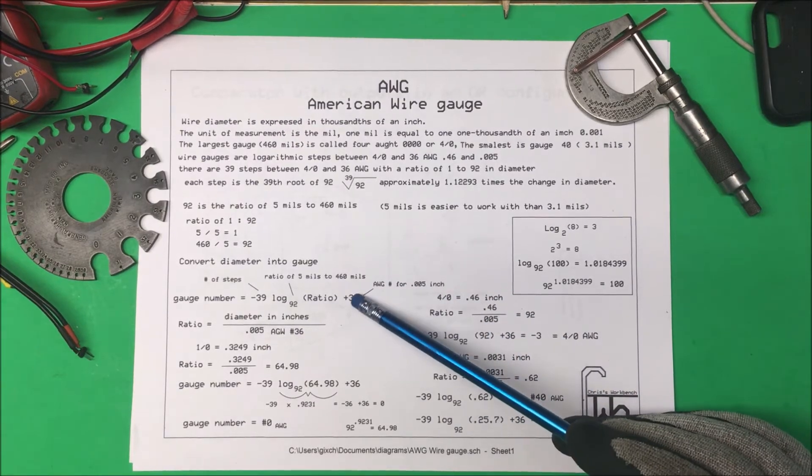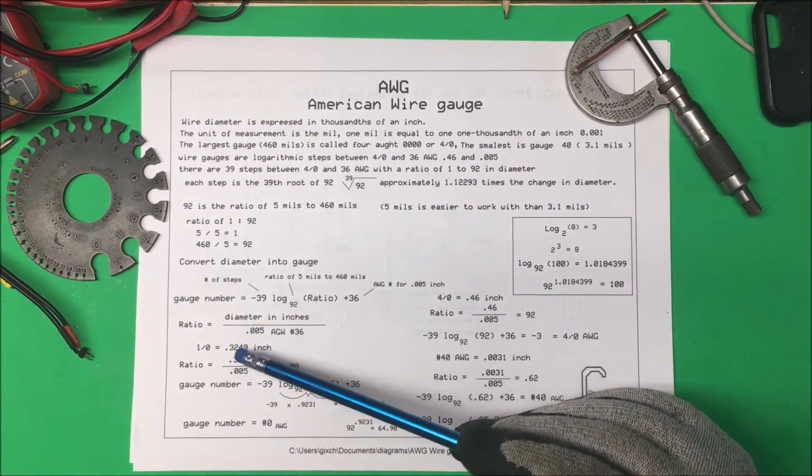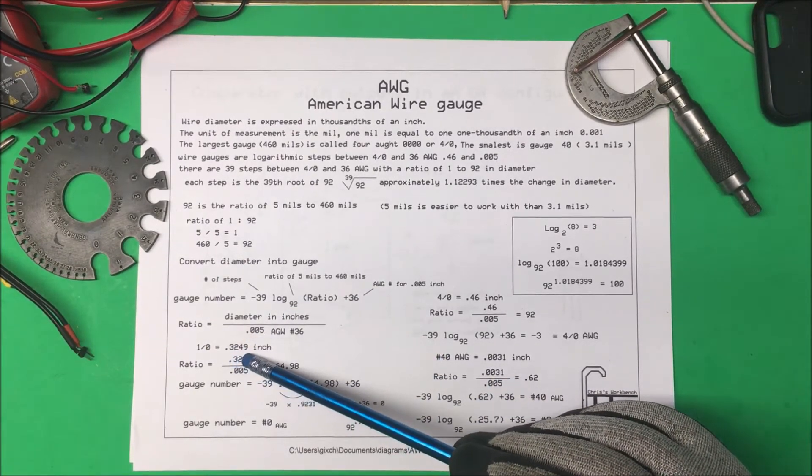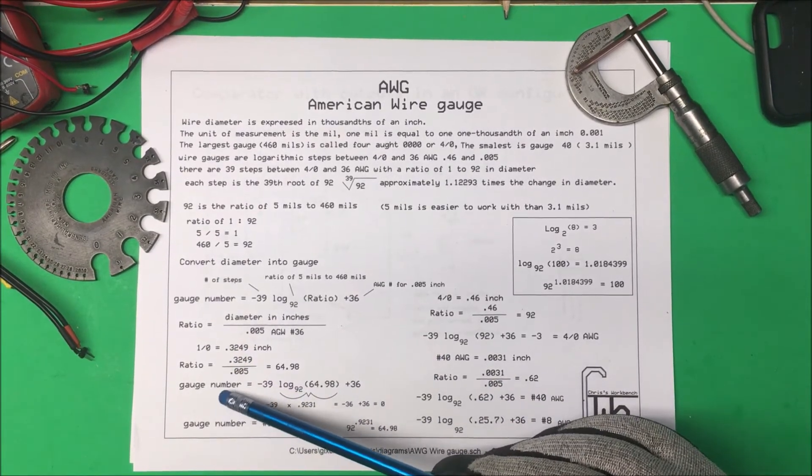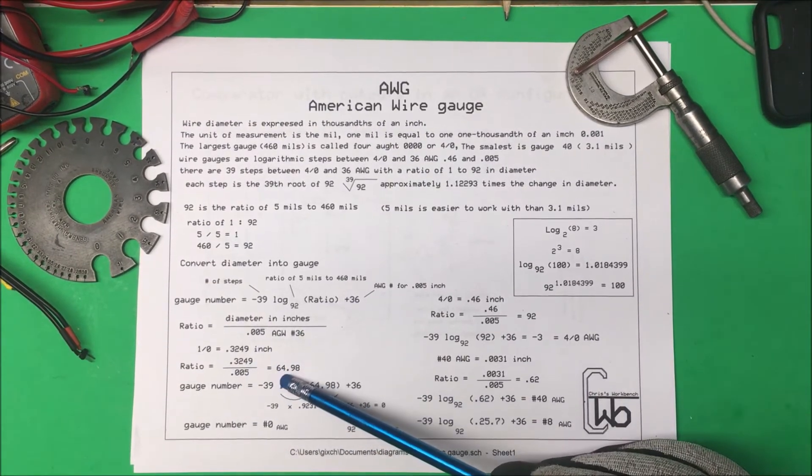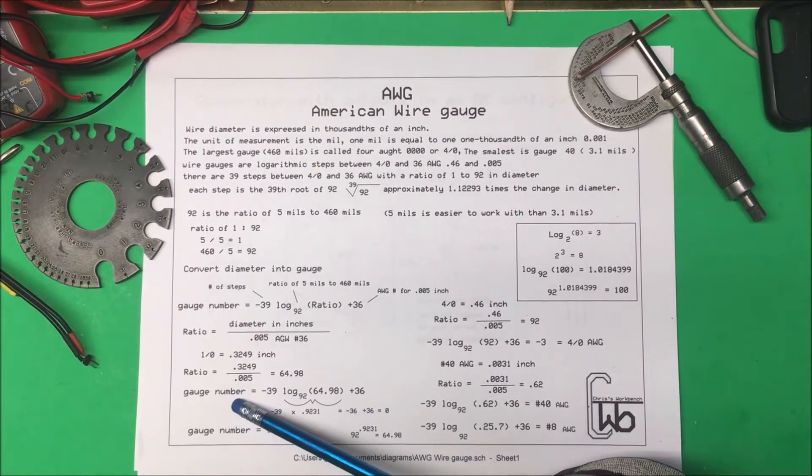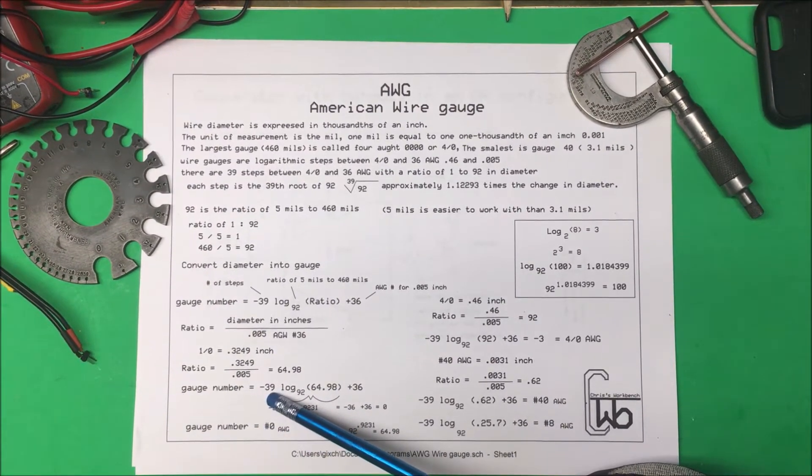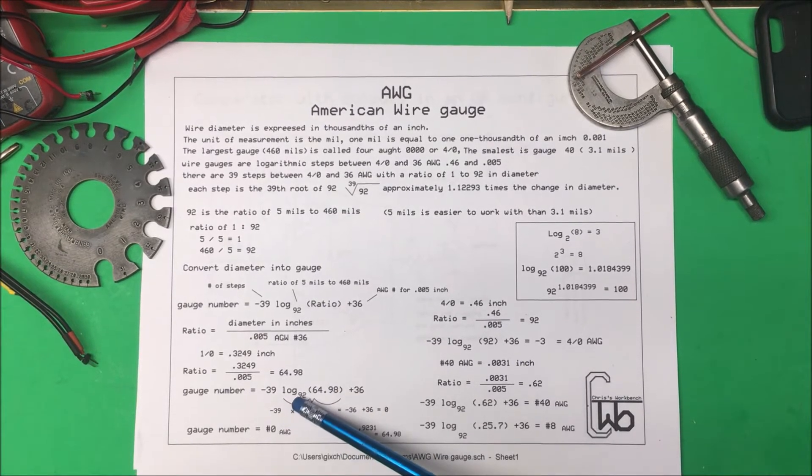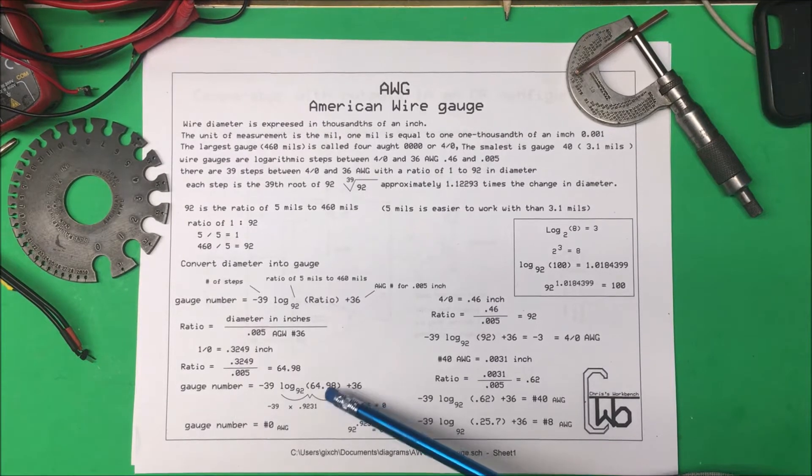Say we have a 1-0 wire and it measures .3249 inch. The ratio would be .005 divided into that which comes out to 64.98, and so our gauge number is going to equal 39 times log base 92 of 64.98.